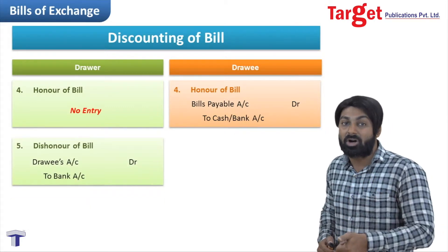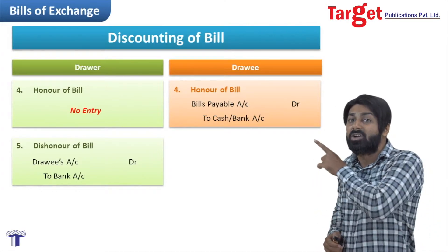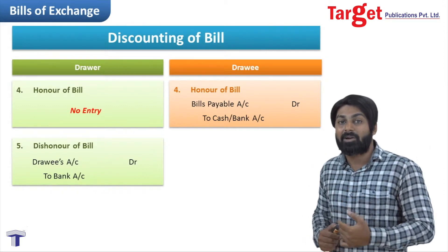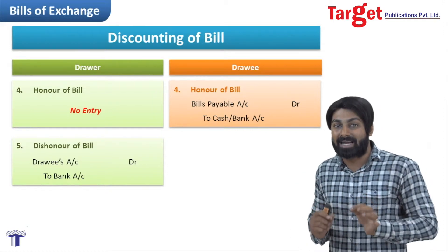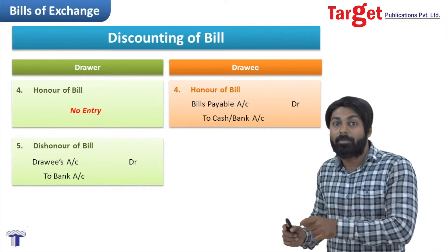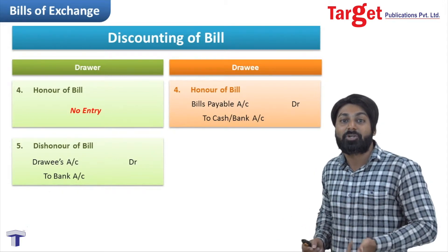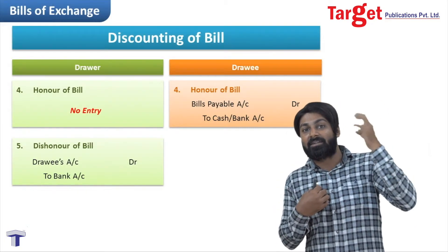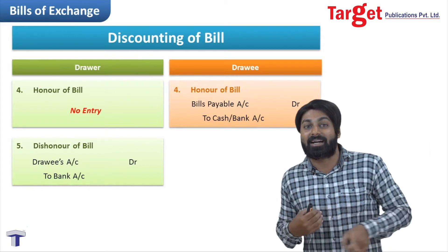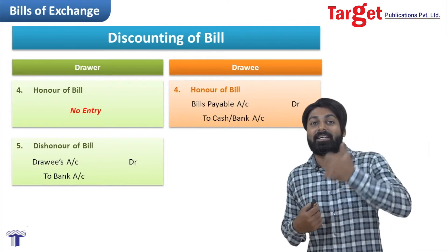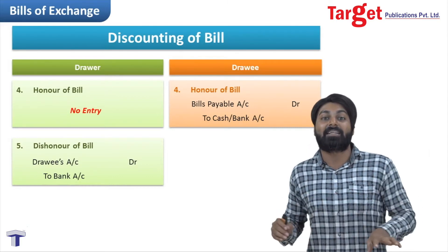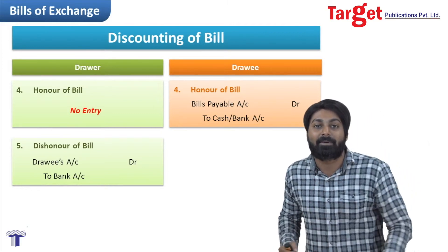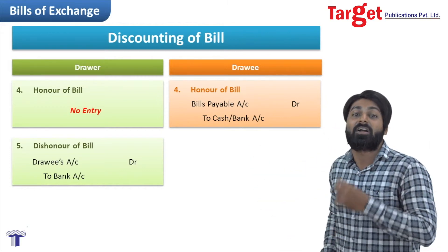If the drawee doesn't make the payment, the bill becomes dishonored. The bill can either be honored or dishonored. If the bill is dishonored, the bank cannot do anything to the drawee directly — the bank will go to the drawer. The drawer is the receiver of the bill back; the bank is the giver of the bill. So the entry in the drawer's books: Drawee's account debit to Bank account — debit the receiver, credit the giver.